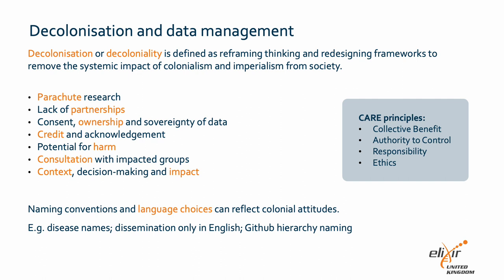Loss of ownership of data and lack of crediting indigenous groups in research is another aspect of this. The avoidance of harm is a key principle of decolonising research, which can be done using consultation processes with impacted groups and using local knowledge to inform decision making and generate impactful outcomes. Some other key considerations lie around naming conventions and language choices for things like naming of disease variants, the dissemination of research findings in English only, meaning often many researchers and other impacted groups cannot access the findings, and even in the naming of things like GitHub hierarchy structures in insensitive ways.